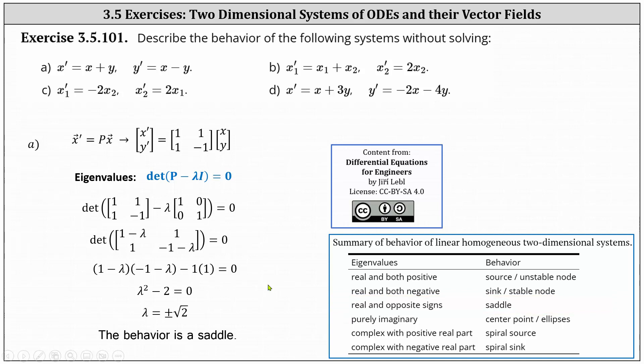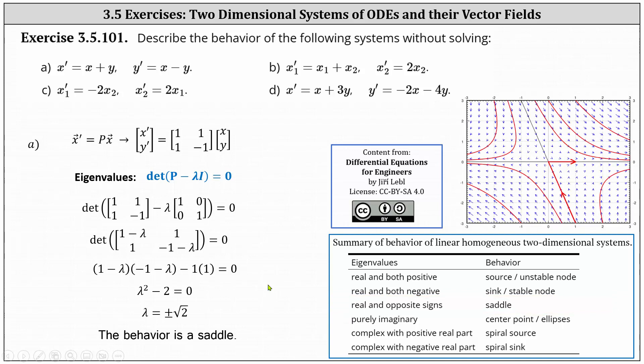From our previous lesson, here's an example of a picture showing the behavior of a saddle. This is not the exact behavior of this system, but it does show the behavior of a saddle.